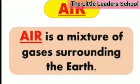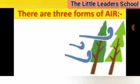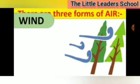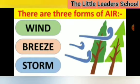Air is a mixture of gases surrounding the earth. We cannot see air, but we can feel it when it moves. There are three forms of air: wind, breeze, and storm.